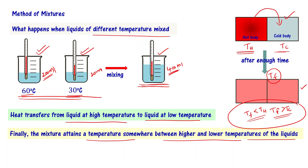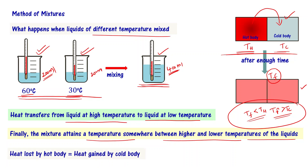The point you have to note here is: when hot body and cold body are in thermal contact, heat transfers from hot body to cold body. The amount of heat lost by the hot body is equal to the amount of heat gained by the cold body. In this case, the temperatures are 30 degrees and 60 degrees, and finally the mixture temperature is going to be 45 degrees.